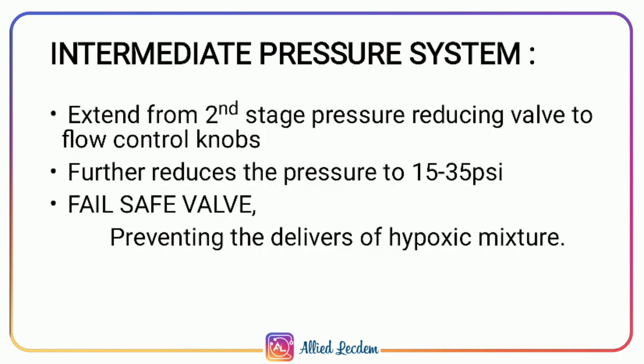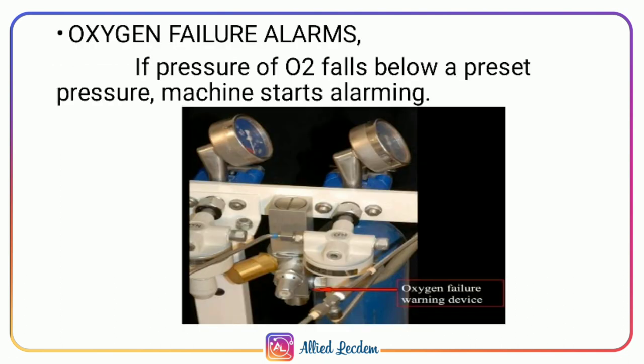The intermediate pressure system extends from the second stage pressure reducing valve to the flow control knob, and further reduces the pressure to 15 to 35 psi. The fail-safe valve prevents the delivery of a hypoxic mixture. The oxygen failure alarm activates if the pressure of oxygen falls below a preset pressure.